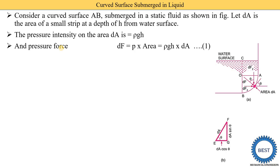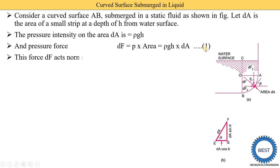Force is pressure multiplied by area. Pressure is ρGH. We first find out the small pressure acting on the small strip and then find the pressure on the total surface. So the pressure force on a small strip is ρGH·DA — this is equation number 1.